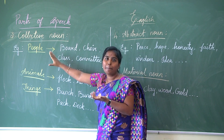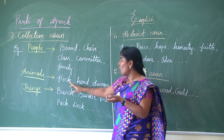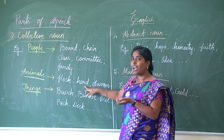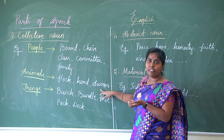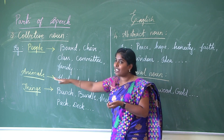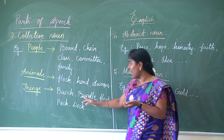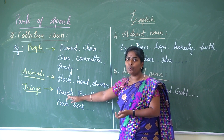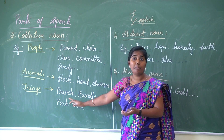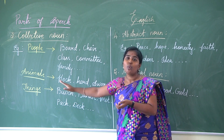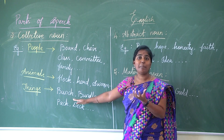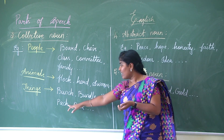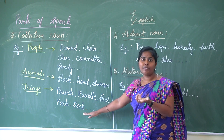For animals, the collective noun words are: flock, herd, swarm. For example, flock of sheep, herd of cattle, swarm of bees. For things, the collective noun words are: bunch, bundle, fleet, pack, and deck. For example, bunch of flowers, bundle of sticks, pack of cards, deck of cards. These words are specific — 'bunch' refers only to things, so you cannot say 'bunch of people.'